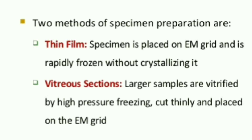The first step is specimen preparation. This is done using two methods: the first is the thin film method, and the second is the vitreous section method. In the thin film method, we take a specimen and place it over an EM grid, which is then rapidly frozen without crystallizing it.